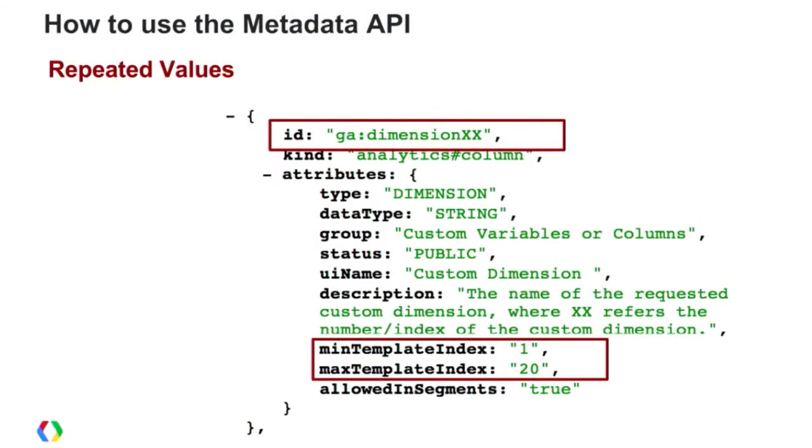There are particular dimensions and metrics that have repeated values. For example, custom dimensions and metrics have double X's as part of the ID. What that means is there's a particular range for that dimension or metric. We provide attributes that give you the boundary or range that is valid, which helps with validation or building out a list of valid dimensions and metrics for a particular repeated value.